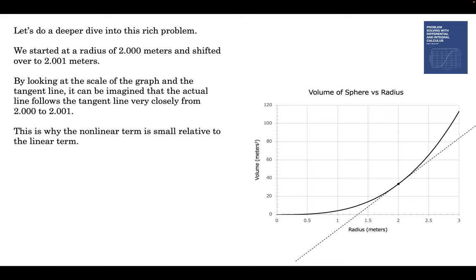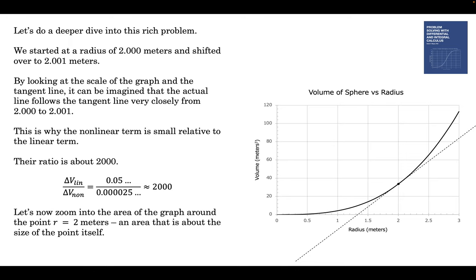So that's why the nonlinear term is small, because the nonlinear term is responsible for the curviness, and it doesn't curve much from 2 to 2.001. The ratio of the two terms is about 2,000. The linear term is about 2,000 times bigger than the nonlinear term. So now we're going to zoom into this point. Let's re-graph this curve. It's the same curve. The volume is 4 thirds pi r cubed, but we're only going to be looking at a tiny area right here. So instead of going from 0 to 3, we're going to go like 1.998 to 2.002. Really close in there.